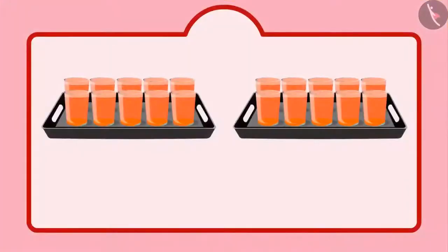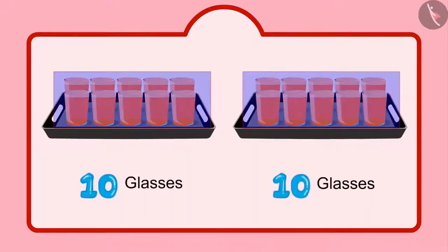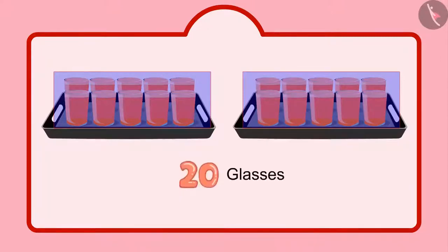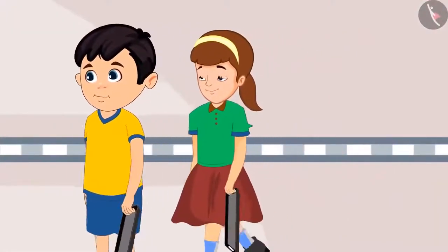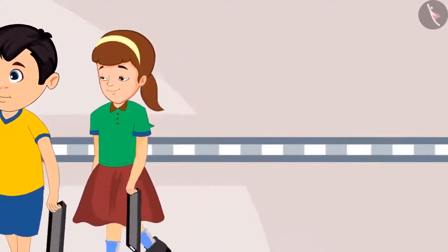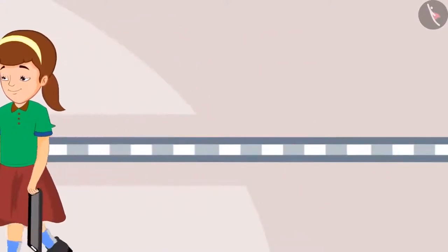Children, can you tell me how many glasses of sherbet Chotu's mother has made? You are right, children. Chotu has 2 plates of 10 sherbets each — it means 2 tens. This means Chotu has 20 glasses of sherbet. Together, Chotu and the team distributed all the glasses filled with sherbet. But they need more sherbet now.